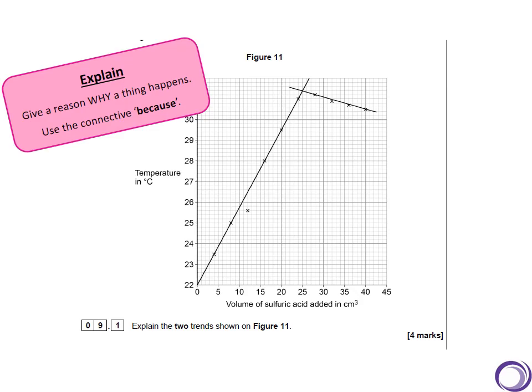This question asked us to explain the two trends shown on the graph. When we explain something, it's really important that we use the connective 'because'—we need to say why something is happening. The other thing you'll notice on this question: it's worth four marks and they're asking you to explain two trends. So you will be expected to make two points about each of the lines—why it's gone up or why it's gone down.